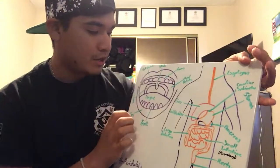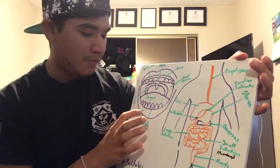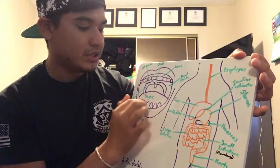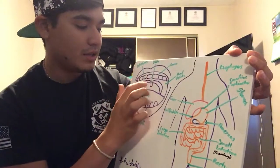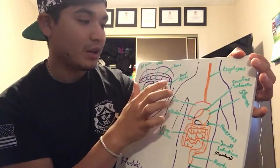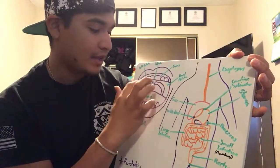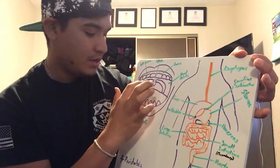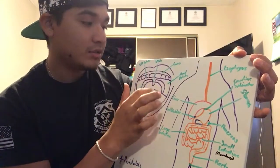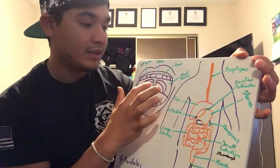In the mouth we have the lip, the gums, the teeth, the hard palate, the soft palate, the tonsils, and the uvula.